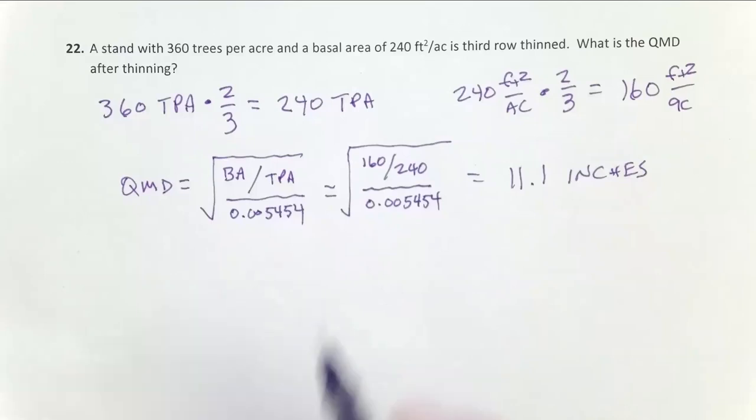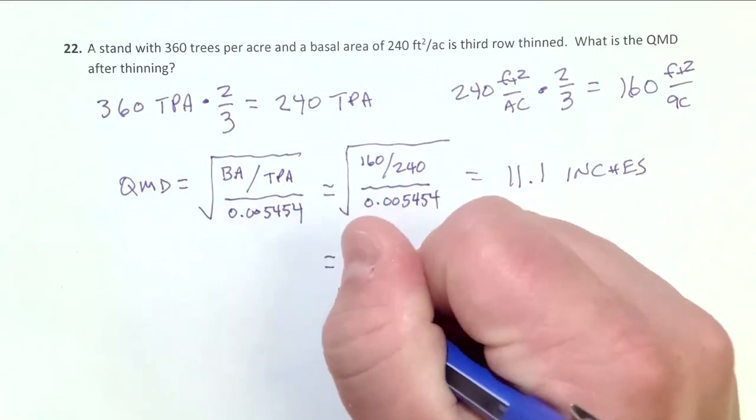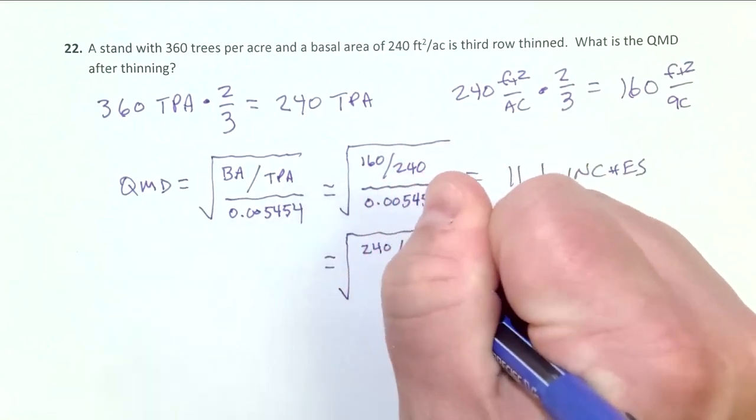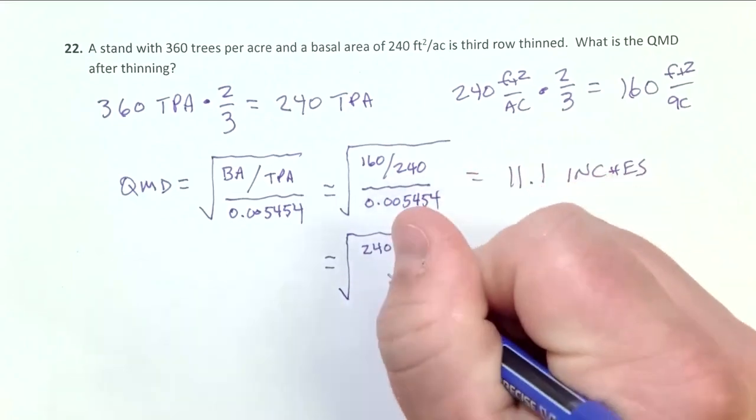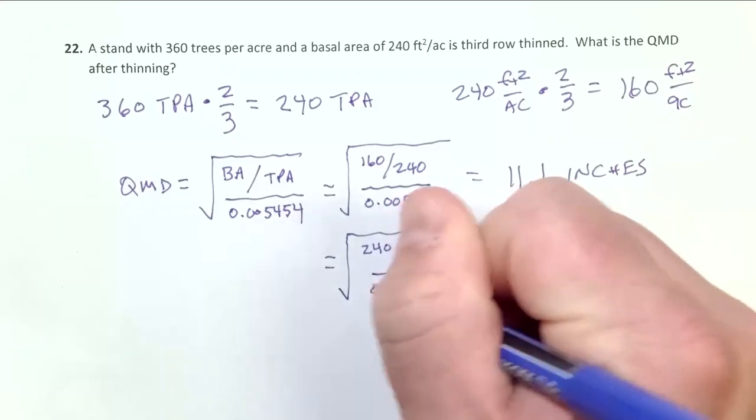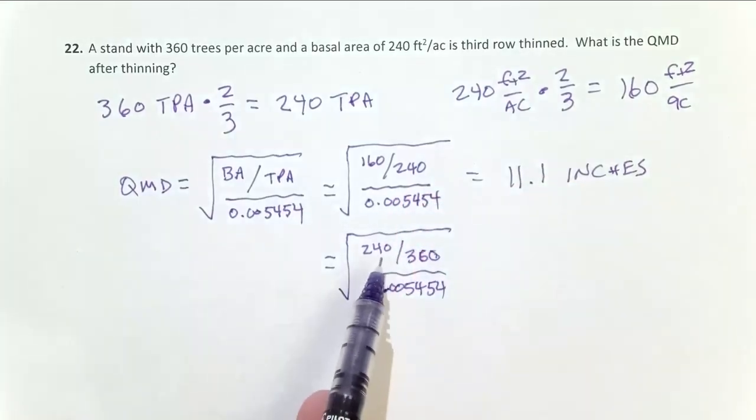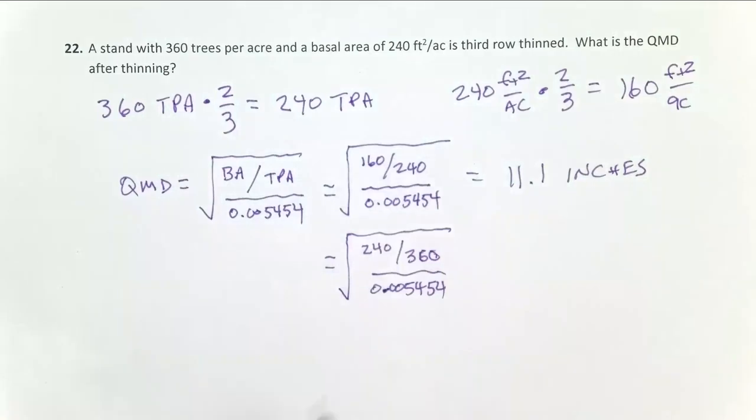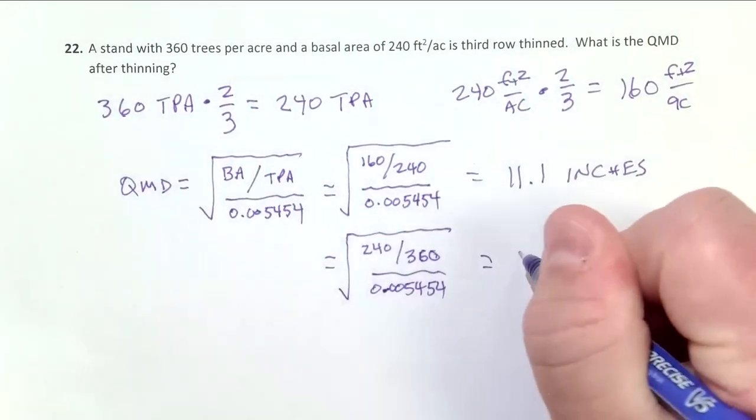And we can see why here mathematically. If I do this with my pre-thin stand data, so this is going to be the square root of 240 over 360 over 0.005454. You'll notice that in this fraction, I multiply that 240 by two-thirds to get 160. I multiply this 360 by two-thirds to get 240. So I basically have the same fraction. That equals two-thirds, 160 over 240. This equals two-thirds. Because I multiplied both the top and the bottom of a fraction by the same thing, I didn't actually change that fraction. So this also equals 11.1 inches.